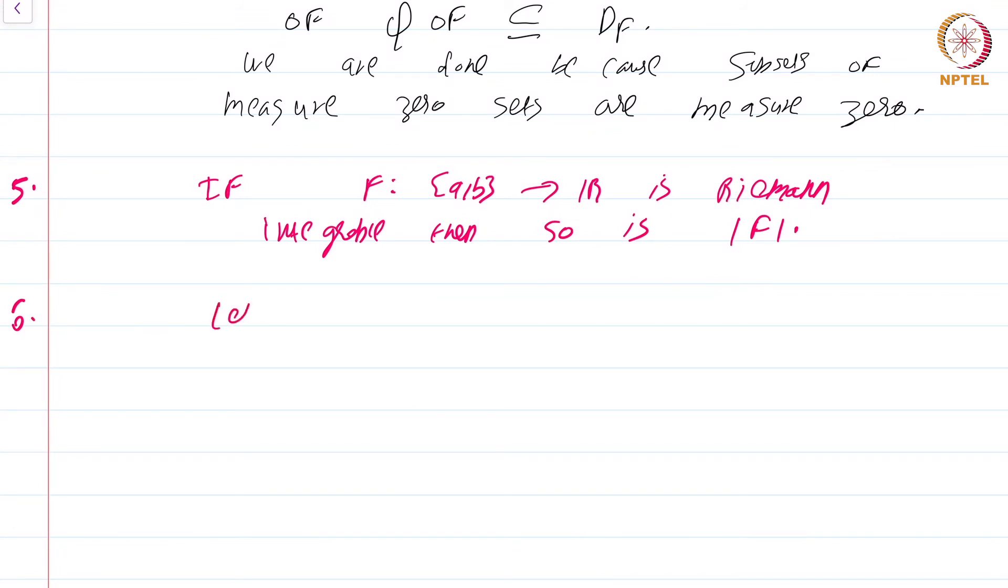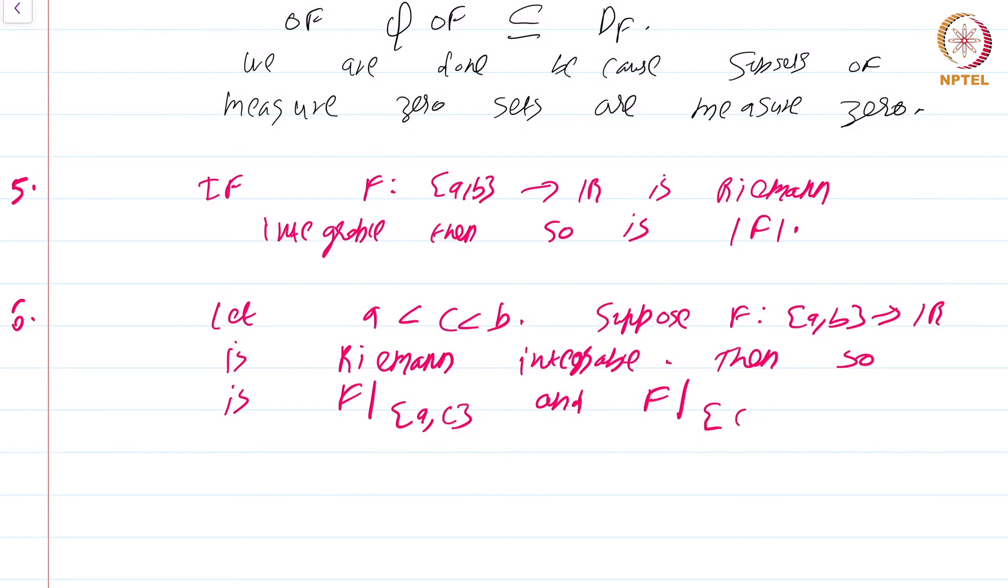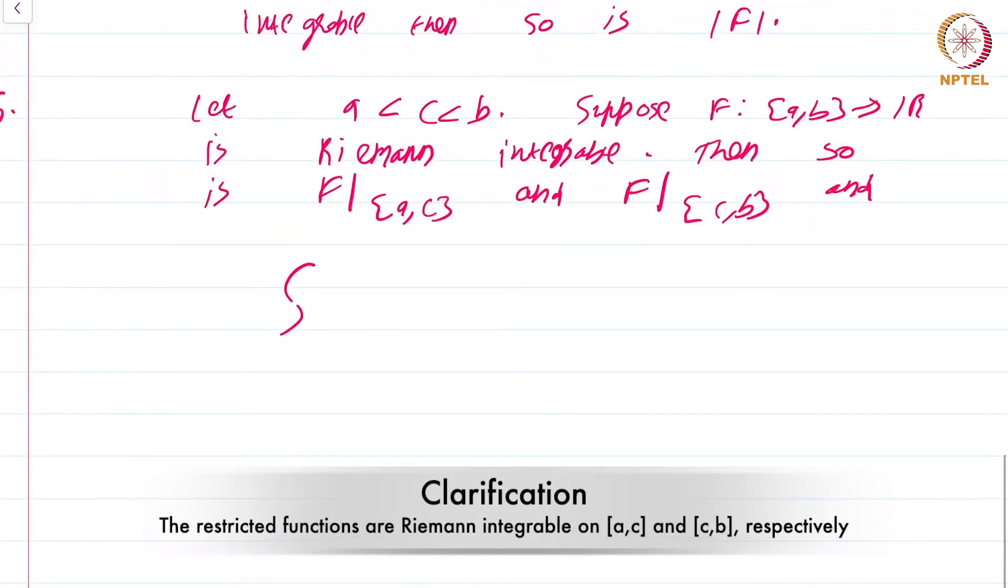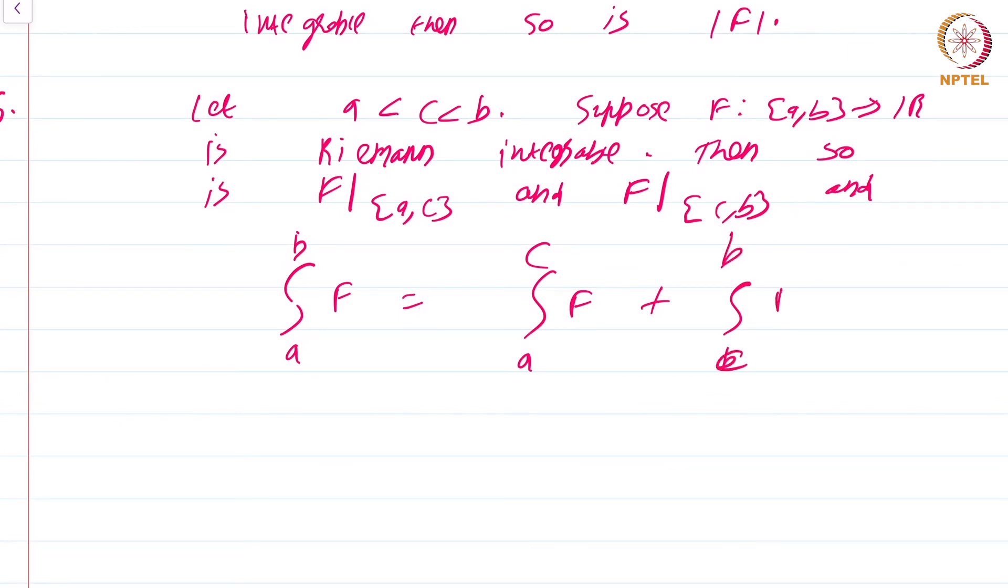[Corollary] 6: Let a < c < b. Suppose f from [a,b] to R is Riemann integrable. Then so is f restricted to [a,c] and f restricted to [c,b]. Proof.